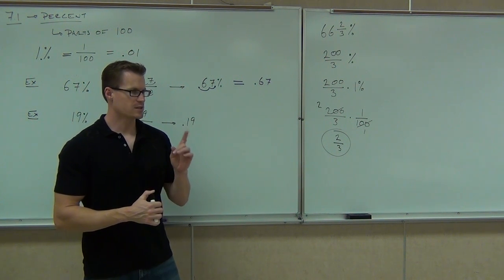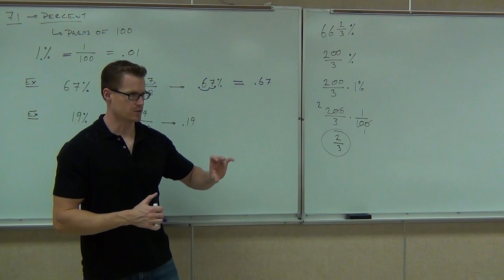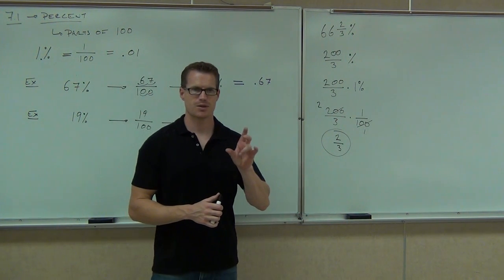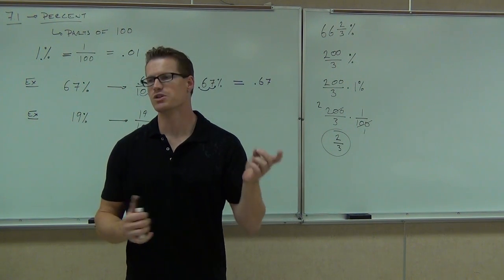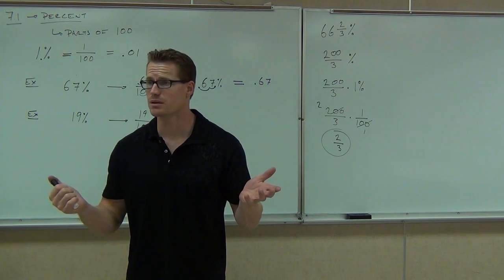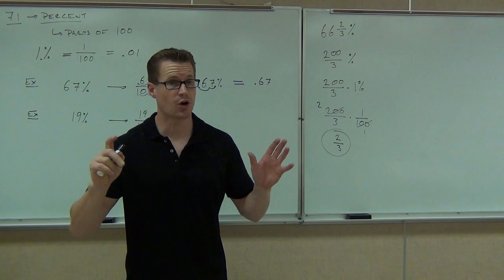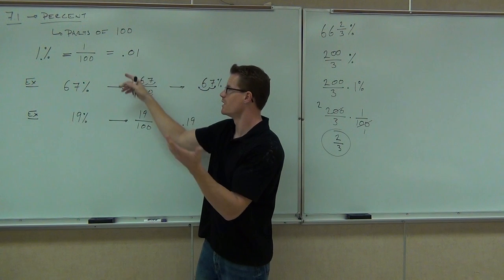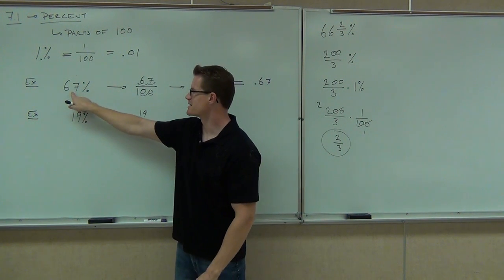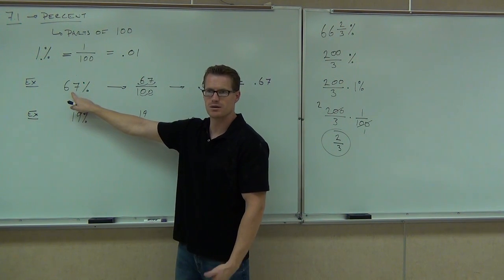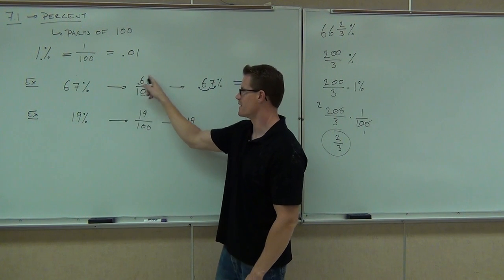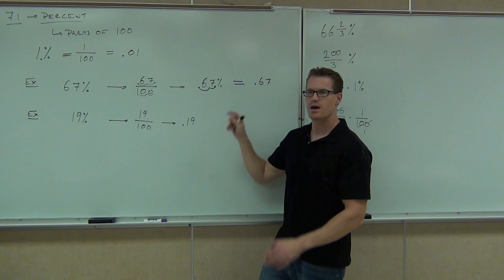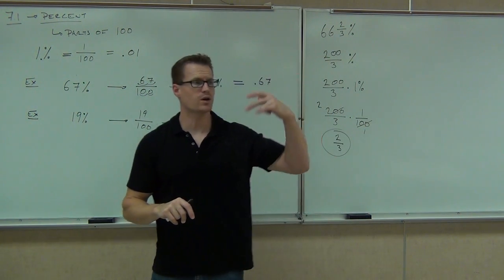A percent sign is the same thing as 1 over 100. If you keep in mind that a percent sign is the same thing as multiplying by 1 over 100, you're going to be just fine. That's what the percent sign means — parts over 100. So if you think of 1% as 1 over 100 or 0.01: 67 times 1 over 100 is 67 over 100, and 67 times 0.01 is 0.67.